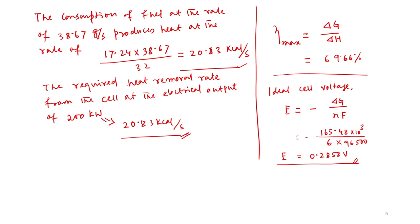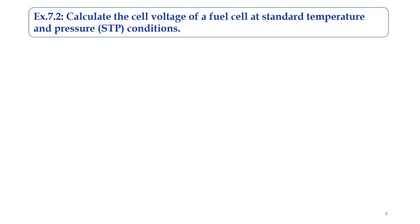To summarize the first problem: we calculated heat generated per mole, heat to be dissipated for 200 kW, the maximum efficiency (69.66%), and the ideal cell voltage (≈0.286 V) for a direct methanol fuel cell. Now we move to the next problem, related to calculation of cell voltage of a fuel cell at standard temperature and pressure conditions using the Nernst equation.